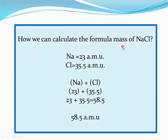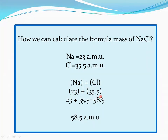How to calculate the formula mass of NaCl: note down the mass of sodium, which is 23 AMU, and chlorine, which is 35.5 AMU. Sodium is present one time and chlorine is present one time. Place a plus sign between them, then place the mass of sodium (23) and chlorine (35.5) and add them. We get 58.5, so the formula mass of NaCl is 58.5 AMU.